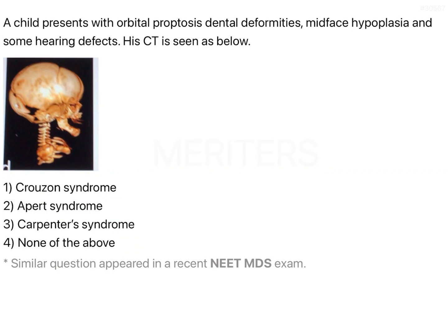The child presents with orbital proptosis, dental deformities, mid-face hypoplasia, and some hearing defects. This CT is seen as below. So what are the options? Crouzon's, Apert, Carpenter, or none of the above.